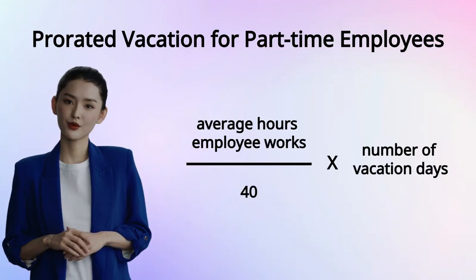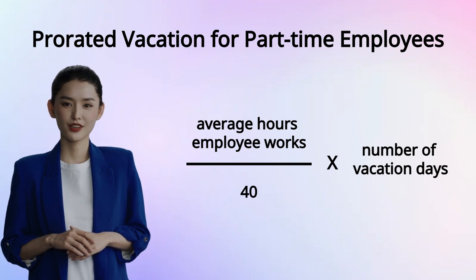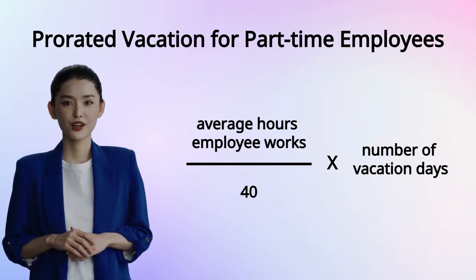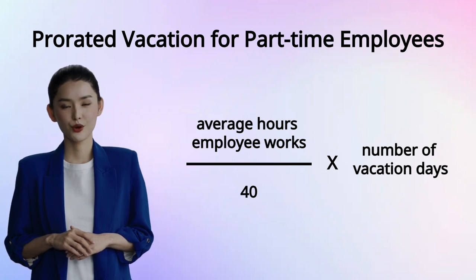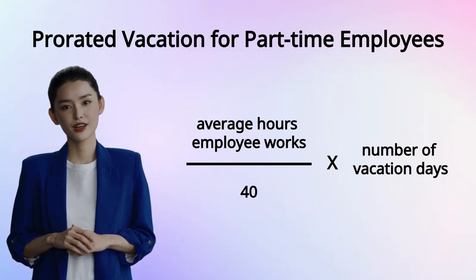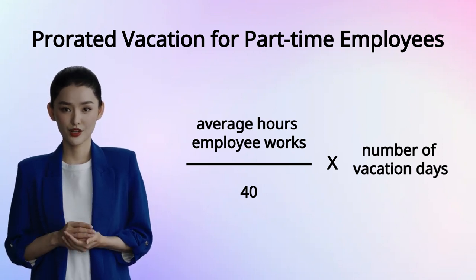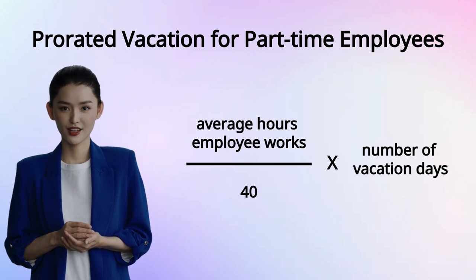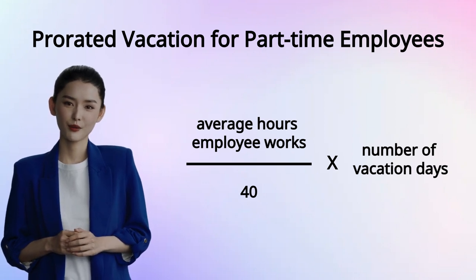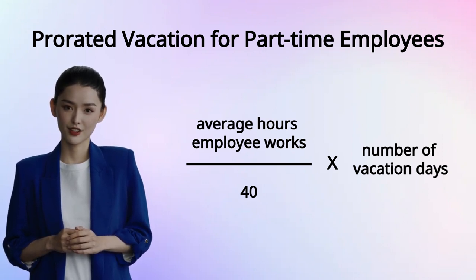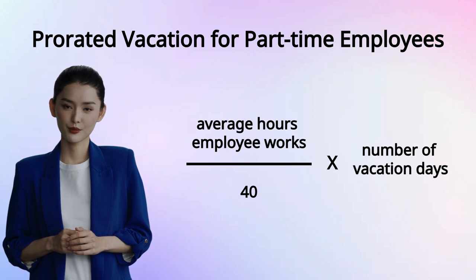For prorating time off for part-time employees, you should use hours. You can start by dividing the average hours that your employee works by 40 — the number of hours a full-time employee works. Next, multiply that number by the number of vacation days, just like you would for full-time employees.